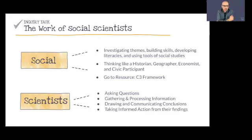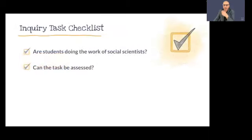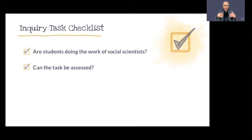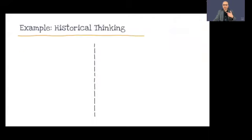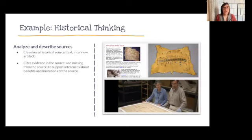In a more traditional social studies education, it was almost always focused on the what — memorize dates, names, battles, take the multiple choice test. The what is common partly because it's easy to assess: you either know a fact or you don't. But the question is: how do you assess whether someone is doing the work of a social scientist when it's not just the what? Elizabeth brought some examples.